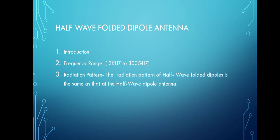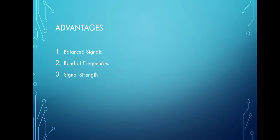Since the half-wave dipole and the half-wave folded dipole antenna share the same radiation pattern, the half-wave folded dipole antenna is used where optimum power transfer is needed and where larger impedances are needed. This folded dipole is the main element of the Yagi-Uda antenna.